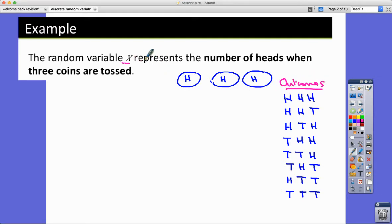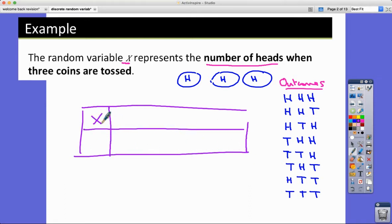So there's eight different outcomes that we could possibly have in that scenario. So let's just label that as the outcomes. Now, x represents the number of heads when three coins are tossed. So we're going to actually draw out now the probability distribution for that particular discrete random variable x. And it's curly x, should I say, small x.